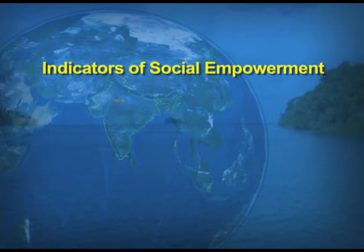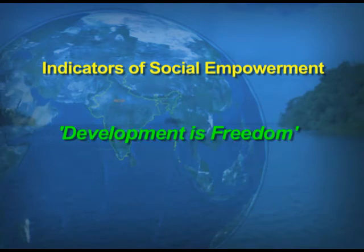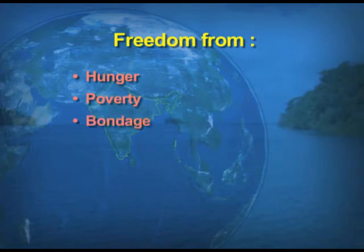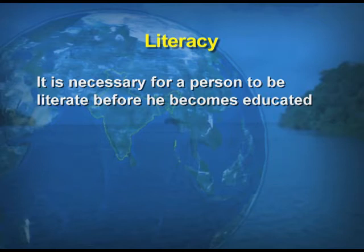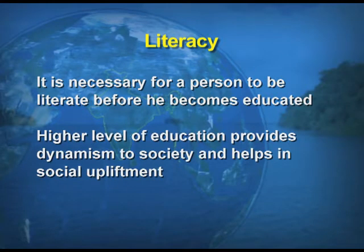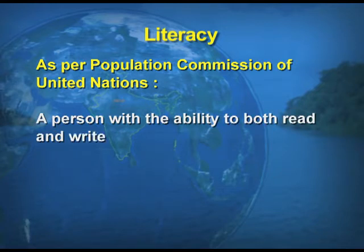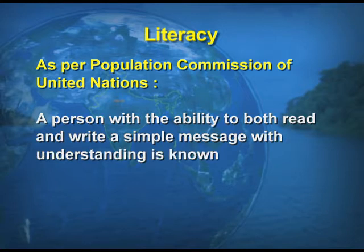Indicators of social empowerment: as mentioned earlier, development is freedom — freedom from hunger, poverty, bondage, ignorance, and illiteracy. Regarding literacy, it is necessary for a person to be literate before becoming educated, and higher education provides dynamism to society and helps in social upliftment. As per the UN Population Commission, a person with the ability to both read and write a simple message with understanding is known as a literate person.